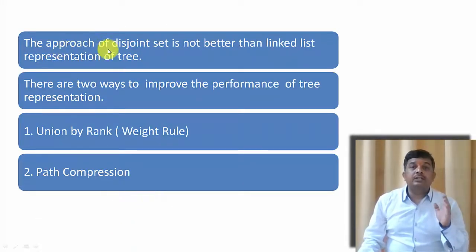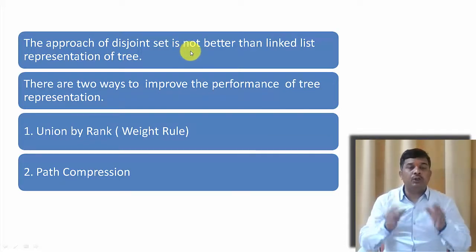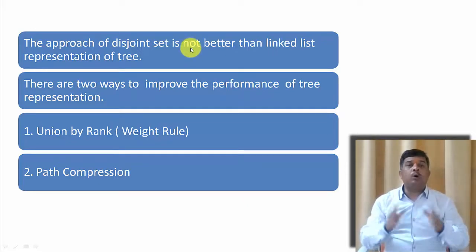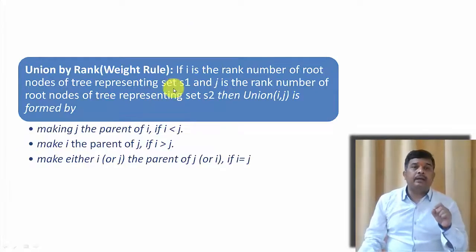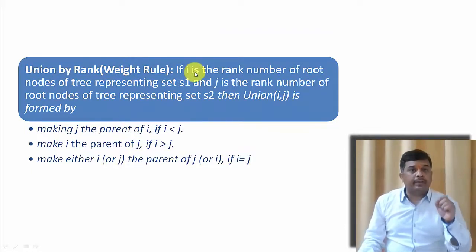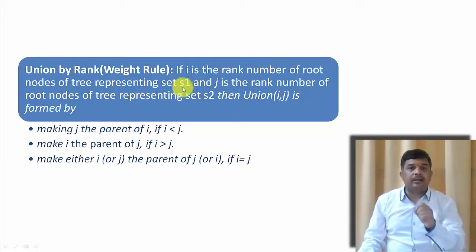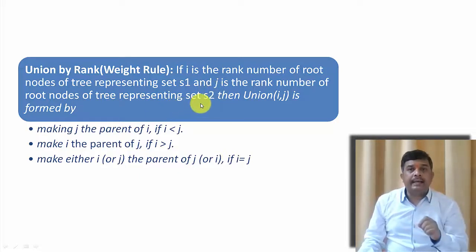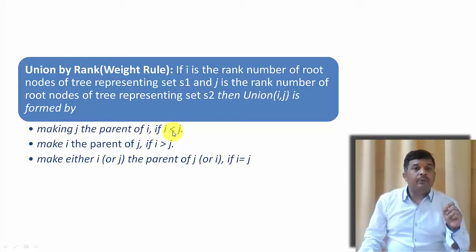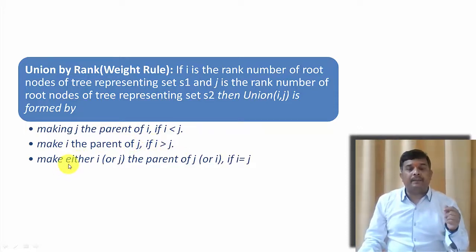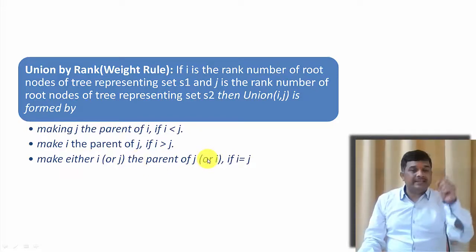The approach of this one set is not better than any linked list or tree representation. To improve the performance of the tree representation we use two concepts: union by rank or weight rule, and path compression. Let us see these one by one. What is union by rank? If i is the rank number of a particular root node in set S1, and j is the rank number of a root node of set S2, then union of i and j will be formed by three rules: we make j the parent of i if i is less than j; we make i the parent of j if i is greater than j; and if i equals j, either can be made the parent of the other.